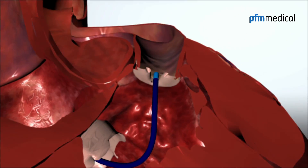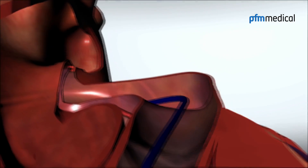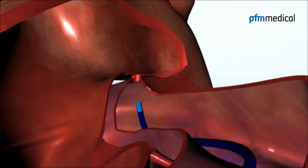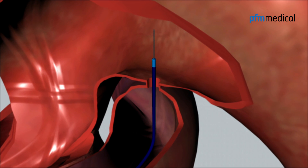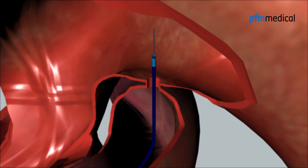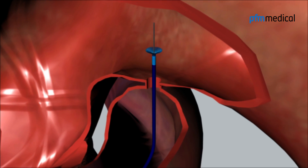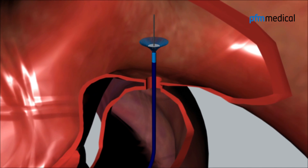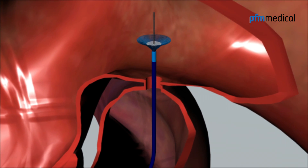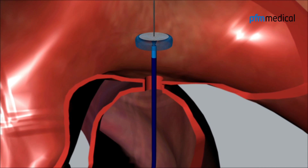An implantation sheath is advanced from the pulmonary artery through the defect and placed in the descending aorta. The occluder is advanced to the distal end of the implantation sheath. The distal disc expands slowly inside the aorta, and the unique configuration of the reverse part of the distal disc can be seen.